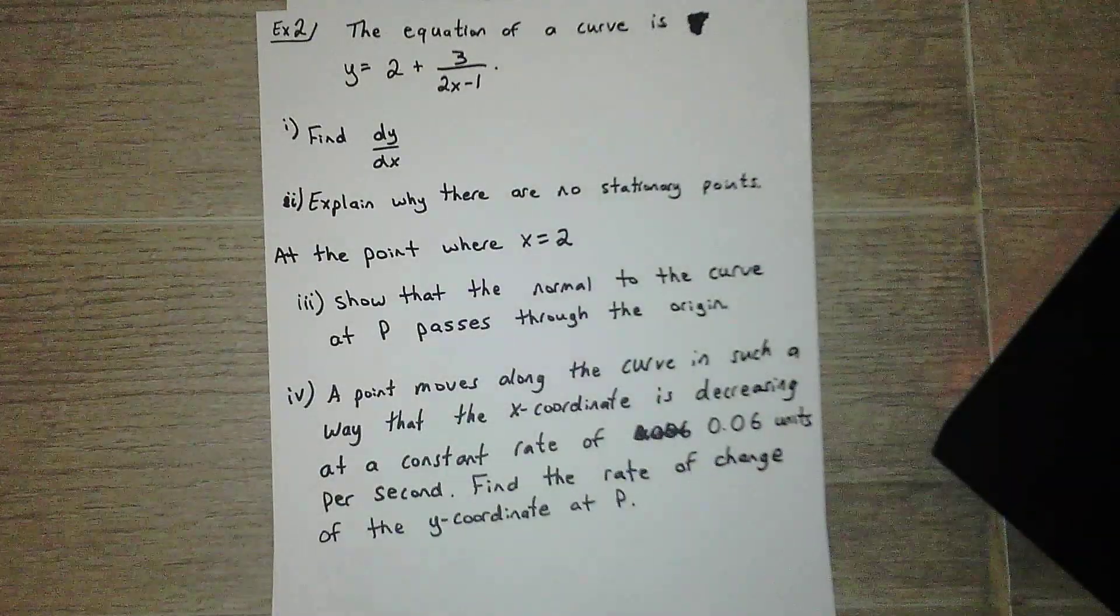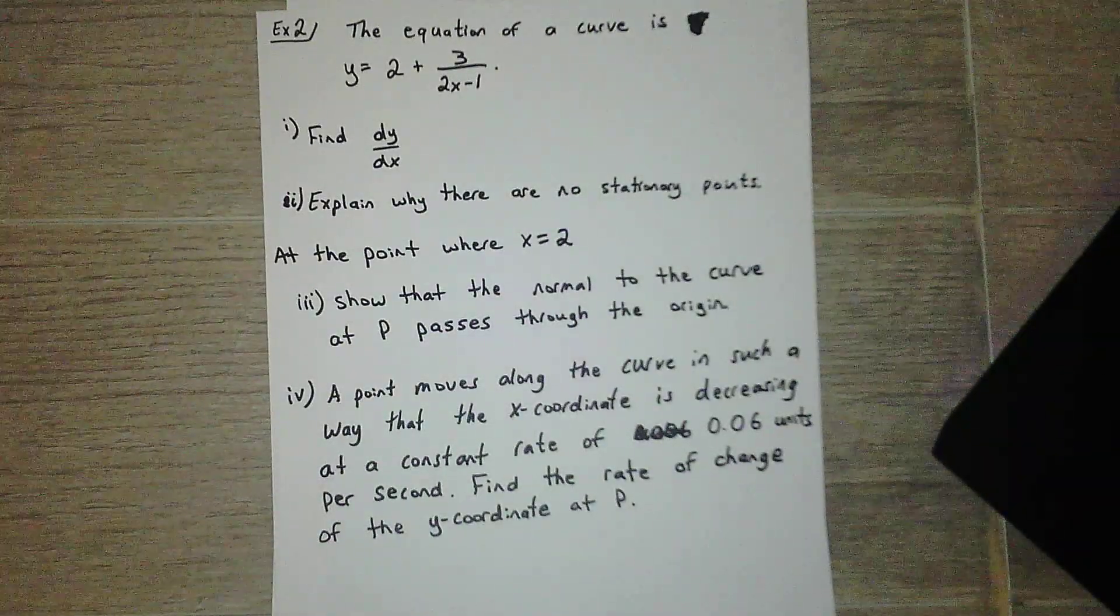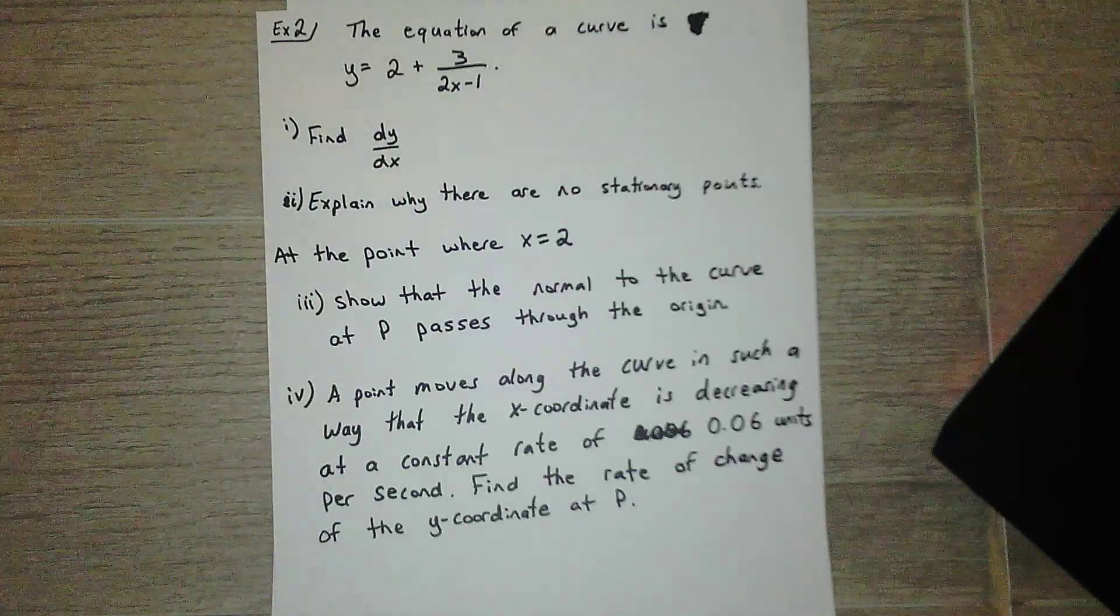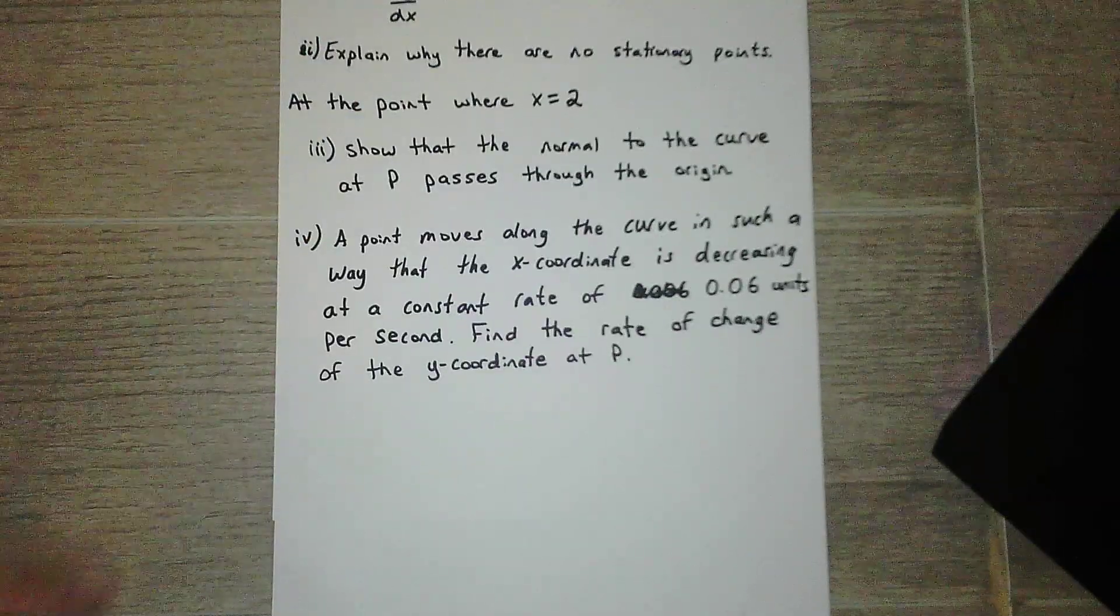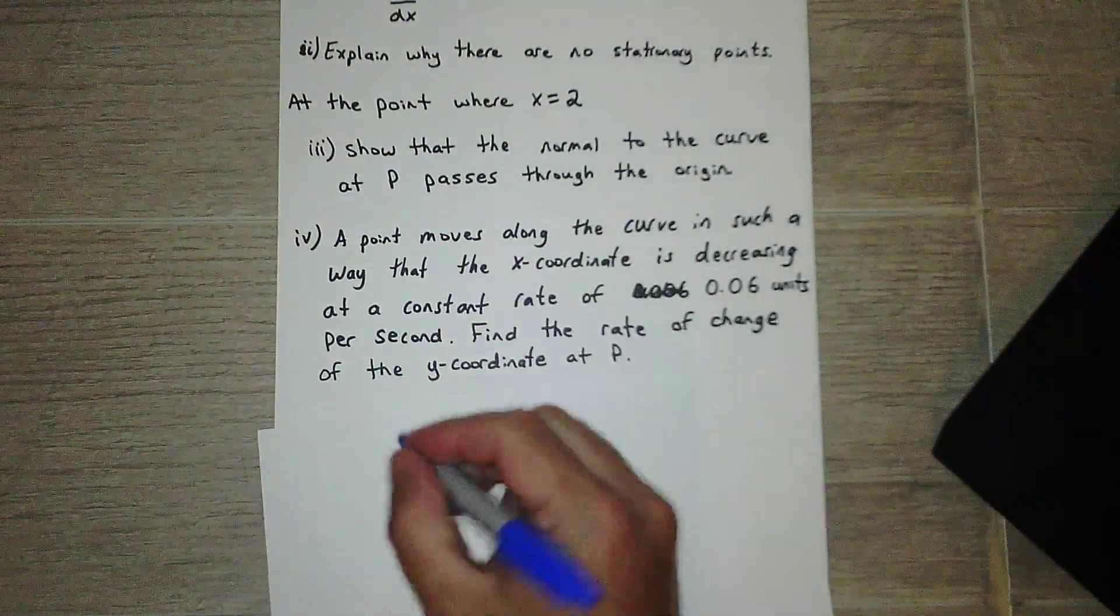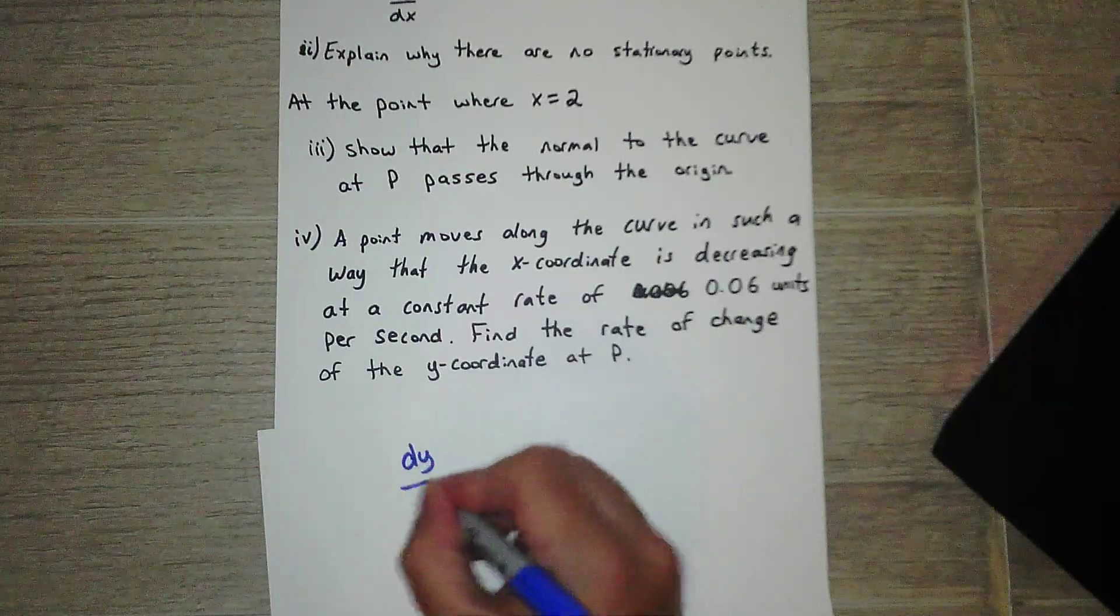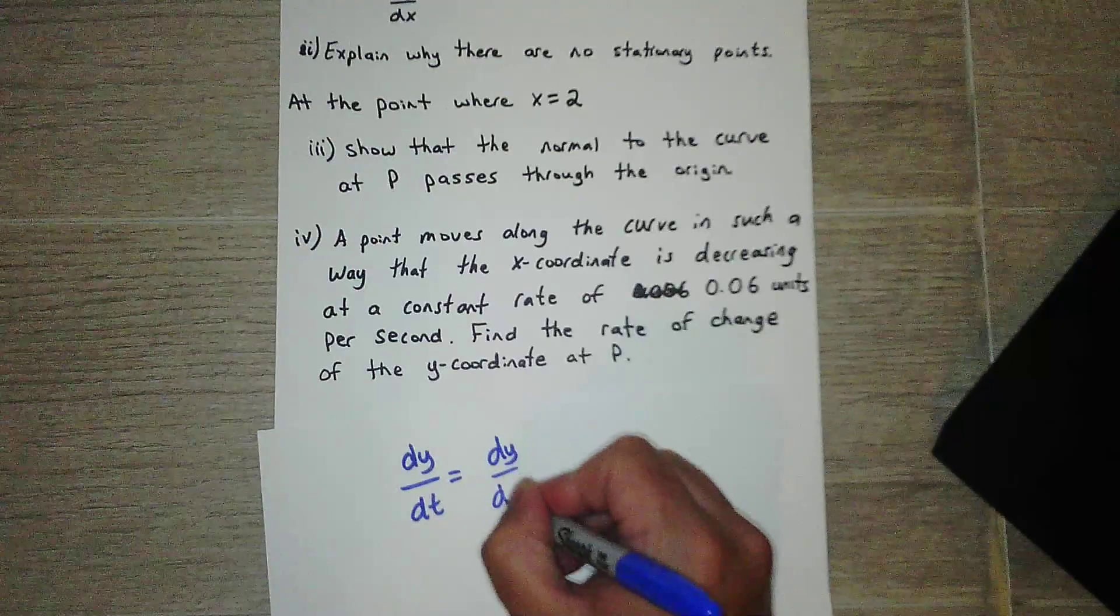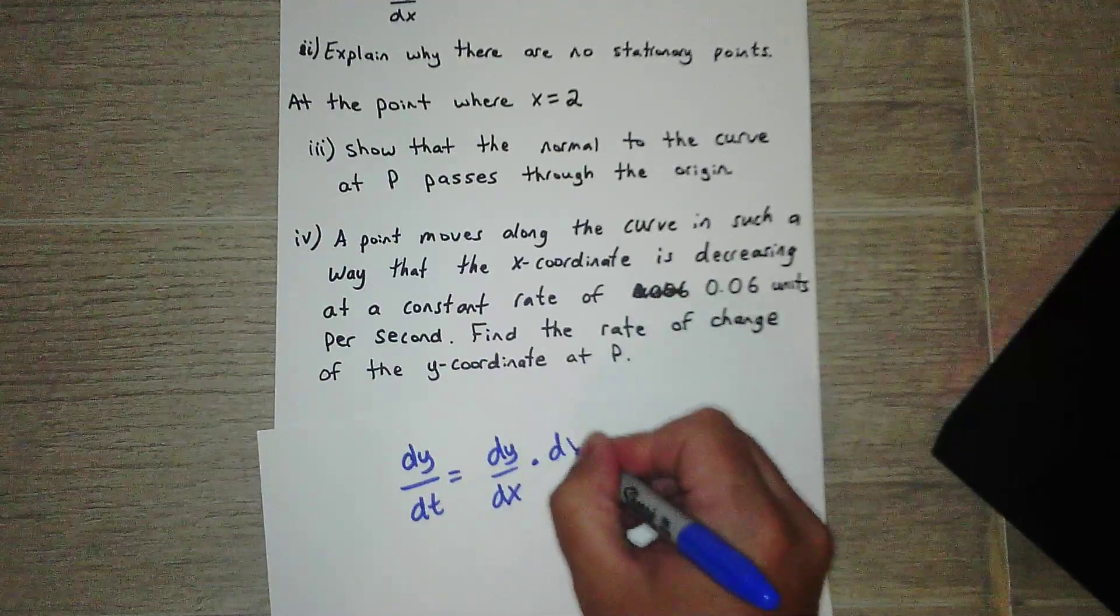Okay, now our rate of change question. So a point moves along the curve in such a way that the x coordinate is decreasing at a constant rate of 0.06 units per second. Find the rate of change of the y coordinate. All right, rate of change.